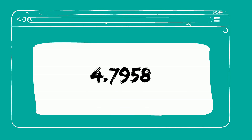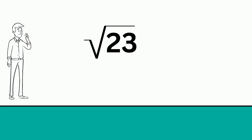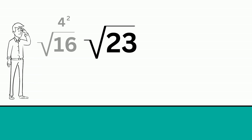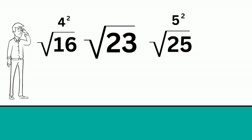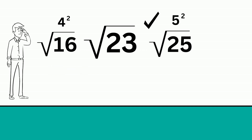You can also estimate the square root of 23. It falls between the square root of 16, which is 4 squared, and the square root of 25, which is 5 squared. Some people take the 4 and divide it by the 5, and that gives you 0.8. I like to just look at it and see that it's much closer to 25 than 16, and I would guess 4.8.